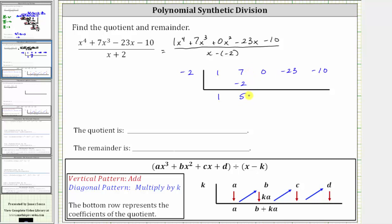And now we multiply by k again. Five times negative two is negative 10. We place negative 10 in the next column, and then we add zero plus negative 10 is negative 10.